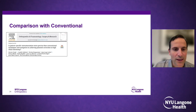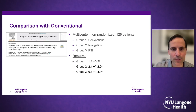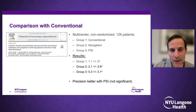A multicenter study comparing PSI to conventional instrumentation and navigation for HTO — with 126 patients in three groups — found that the PSI group had the least amount of difference between the preoperative plan and the postoperative result, though it was not statistically significant. It certainly shows PSI is at least as precise, if not more so, than standard HTO techniques.